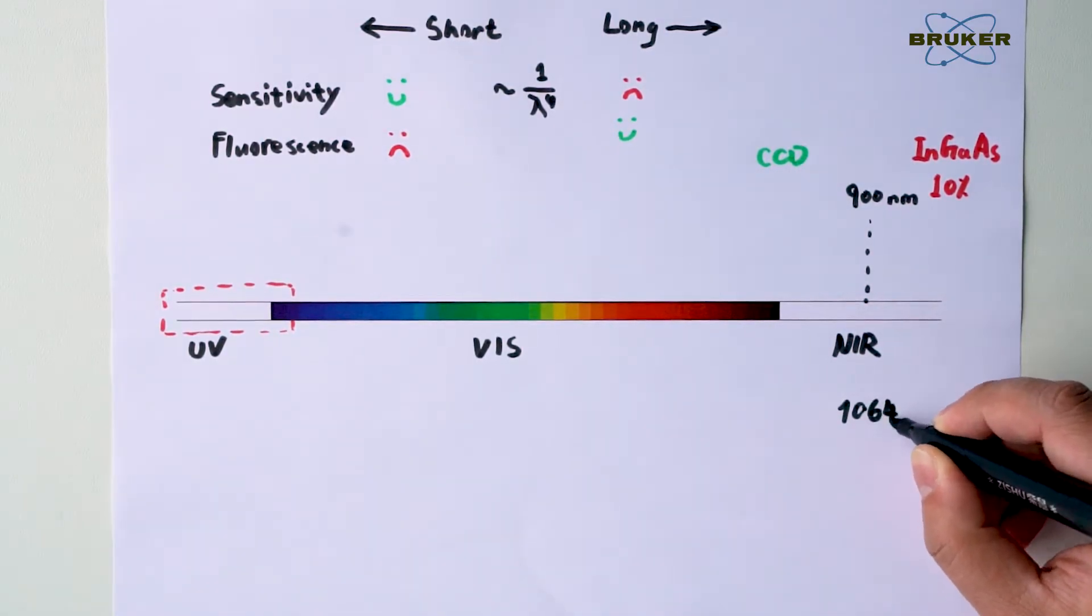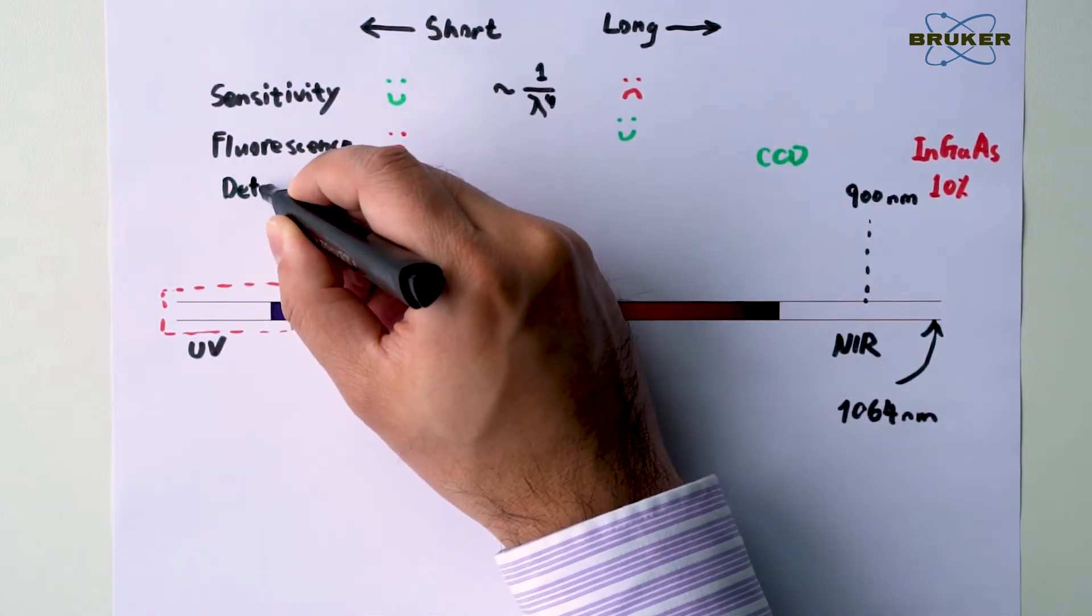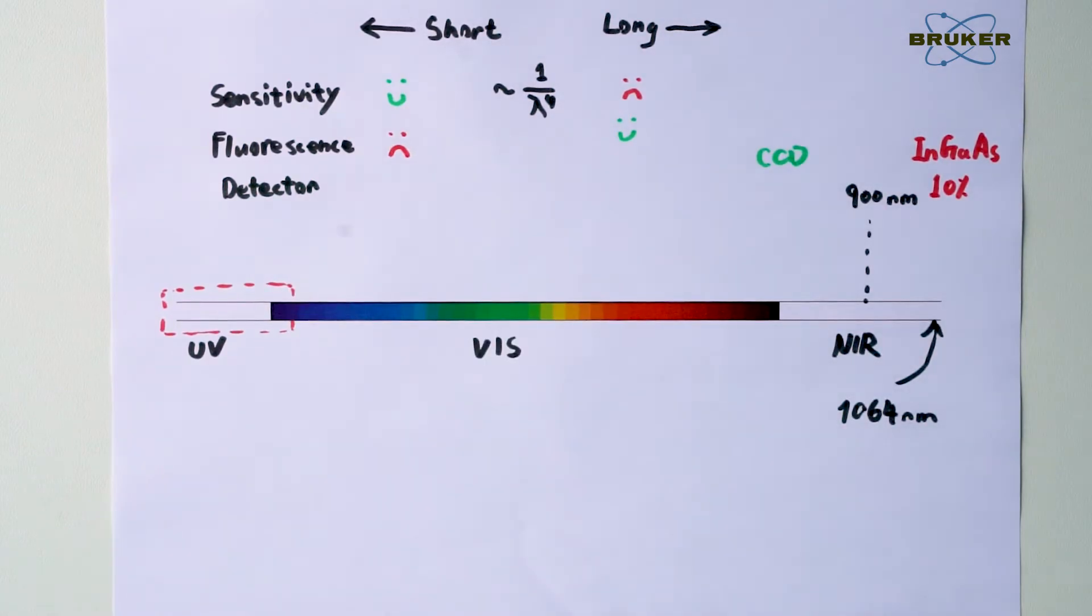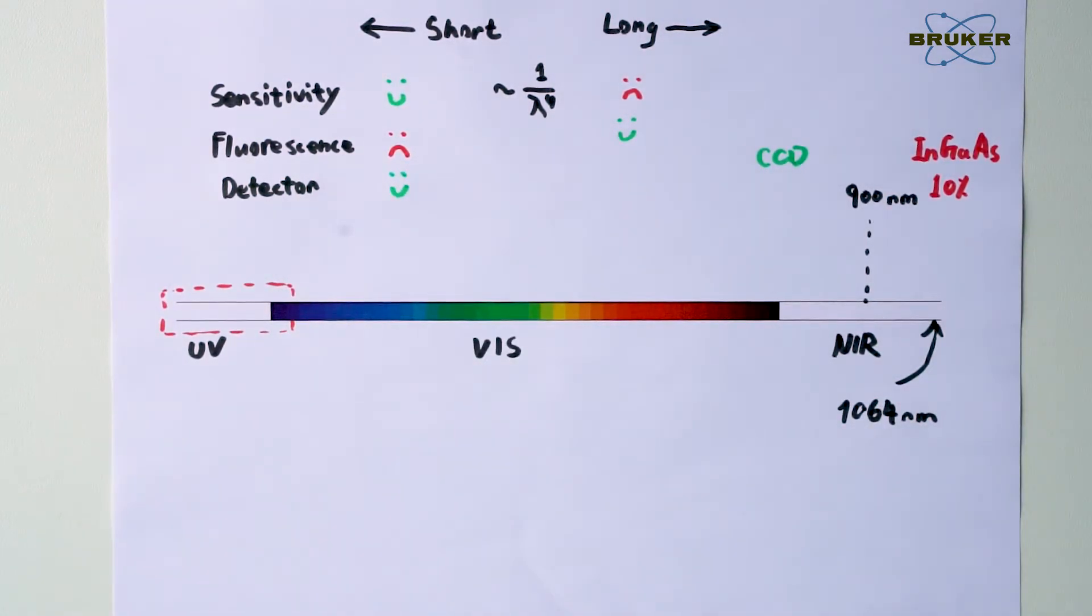Still, researchers apply 1064 nm lasers for strong fluorescence samples, sacrificing sensitivity and measurement speed, because they cannot be analyzed with any visible laser.